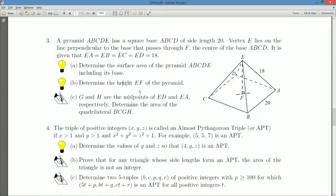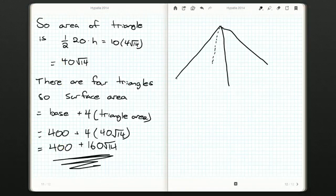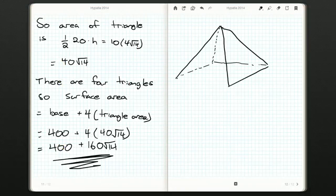Part B: Determine the height, EF, of the pyramid. Let's draw ourselves a little bit of a picture. I think using Pythagorean theorem, we could probably figure this out. So let's draw ourselves a nice big picture. I'm going to have to draw lines on this. And I want there to be enough space so that everything makes sense.